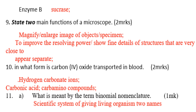Carbon dioxide is transported in blood as hydrogen carbonate ions, carbonic acid, and carbamino compounds.